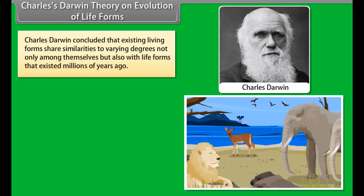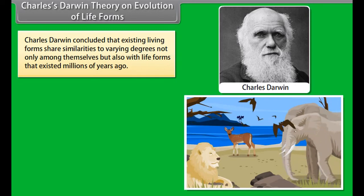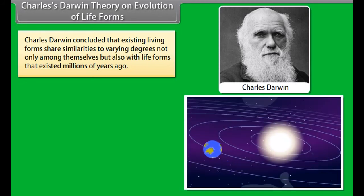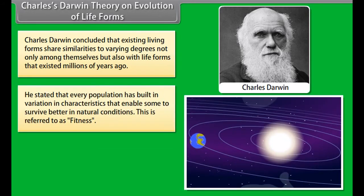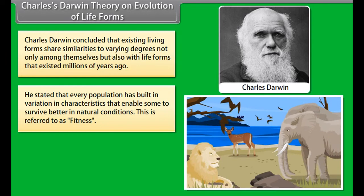Theory of special creation has three connotations according to conventional religious literature. All living organisms that we see today were created as such. The diversity was always the same since creation, will be the same in future also. Earth is about 4000 years old.